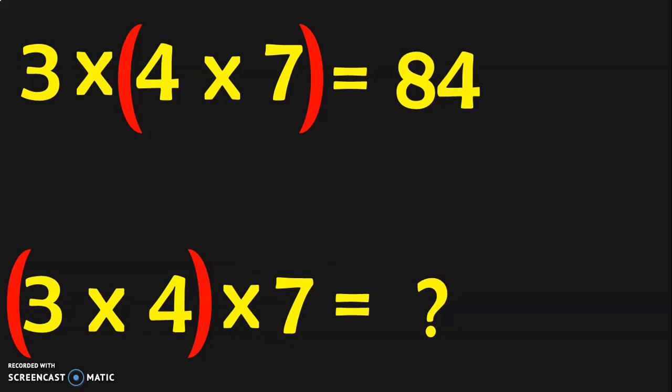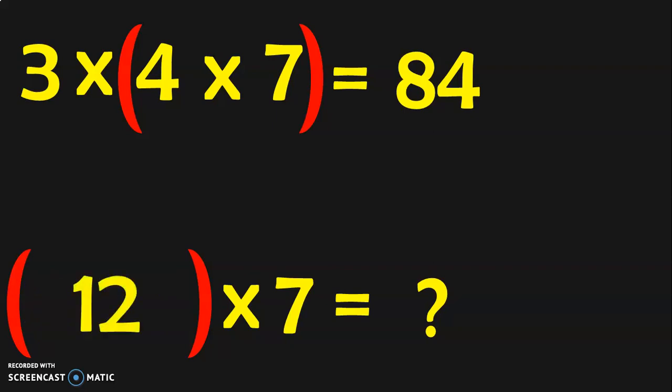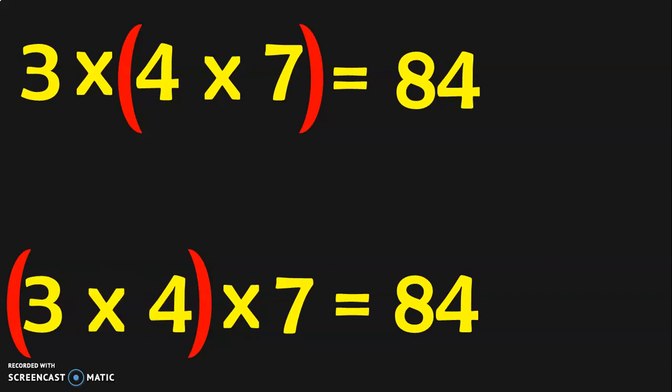Let us simplify the bracket 3 into 4, which is 12. Next we have to do 12 into 7. We know 7 tables — 7 into 12, what is the answer? 84. 12 into 7 or 7 into 12 is going to give you the same answer, as we also saw in the first property. If you know 12 tables that is fine, or from the 7 tables, 7 into 12 is 84. This verifies the property.